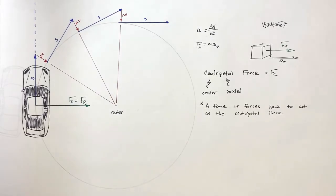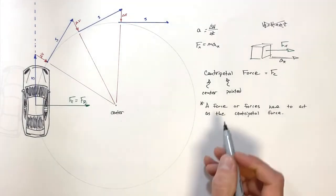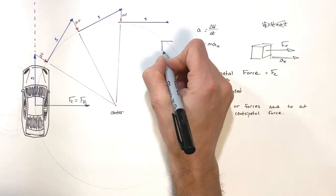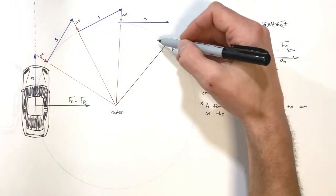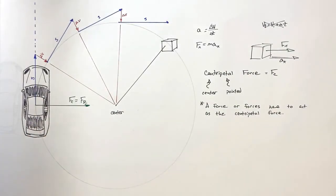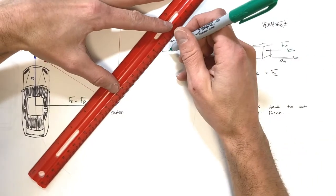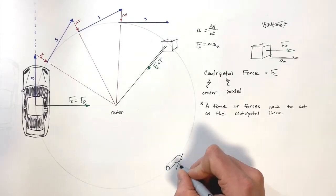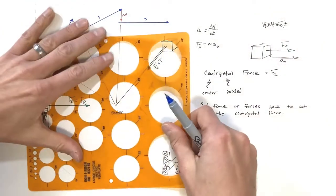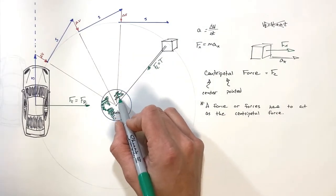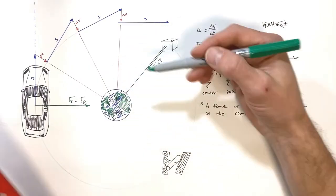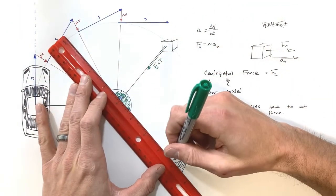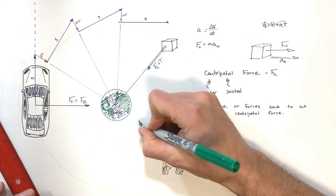So anytime we're dealing with something going in a circle, we need to be thinking about which force is acting centripetally on the object. For example, let's say we take a simple block and put it on the end of a string and swing it in a circle — in that case it would be the tension in the string which was acting centripetally on the block. Or we could take a look at something like a satellite orbiting the Earth. When we look at a satellite orbiting the Earth in a big circle, the centripetal force in that case is in fact the force of gravity.